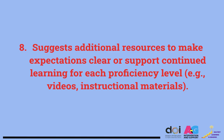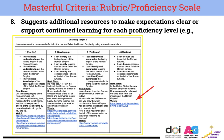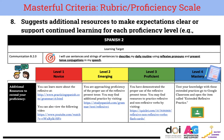Suggest additional resources to make expectations clear or to support continued learning for each proficiency level. This is a portion of a teacher's rubric where they have provided additional resources available to students to level up — students have options to listen to vocabulary, listen to dialogue, and watch videos. In another example, the teacher has provided additional videos appropriate for each proficiency level on their rubric. In a further example, the teacher has also provided resources appropriate for that level, including links to websites and videos.